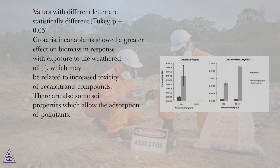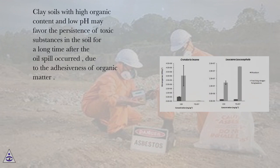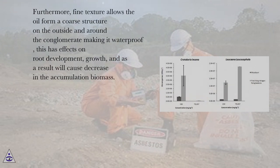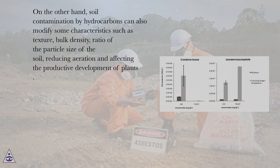There are also some soil properties which allow the adsorption of pollutants. Clay soils with high organic content and low pH may favor the persistence of toxic substances in the soil for a long time after the oil spill occurred, due to the adhesiveness of organic matter. Furthermore, fine texture allows the oil to form a core structure on the outside and around the conglomerate, making it waterproof. This has effects on root development and growth, and as a result will cause a decrease in the accumulation of biomass. Soil contamination by hydrocarbons can also modify characteristics such as texture, bulk density, and ratio of particle size of the soil, reducing aeration and affecting the productive development of plants.